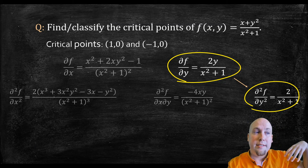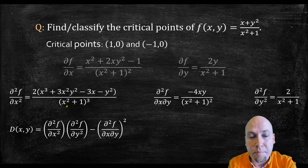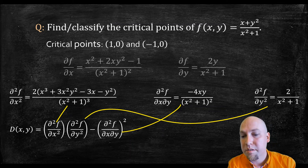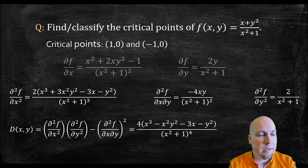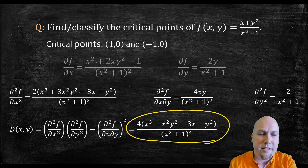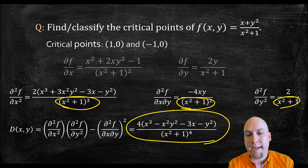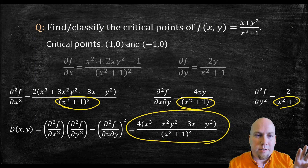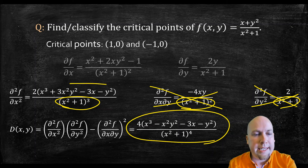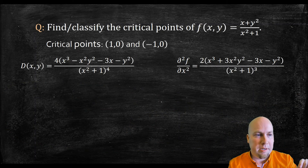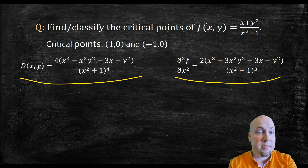Now construct D = (double x partial)(double y partial) − (mixed partial)². Plug in all three formulas and simplify — you have to expand and collect like terms in the numerator; the denominator ends up as different powers of (x² + 1). After simplification, you have your D function. At this point, you only need to keep track of D and the double x partial, since those are what you use to classify critical points.